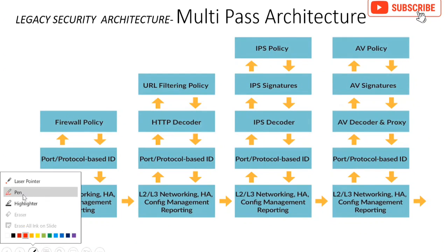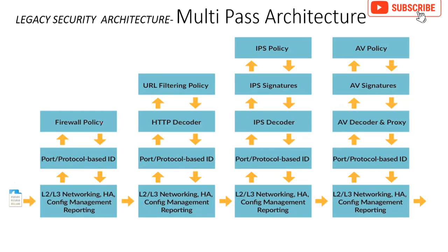In multi-pass architecture, like some legacy firewalls use, once a packet hits the interfaces - like L2 or L3 interfaces - the firewall processes it sequentially. In legacy firewalls, packets hit on the interfaces, whereas in Palo Alto firewall it is zone-based. Once the packet hits the interface, the firewall first checks the policy - the source IP, destination IP, services, whatever rule you set.